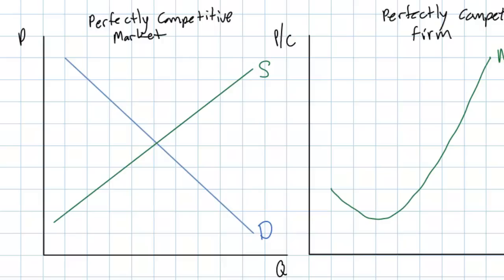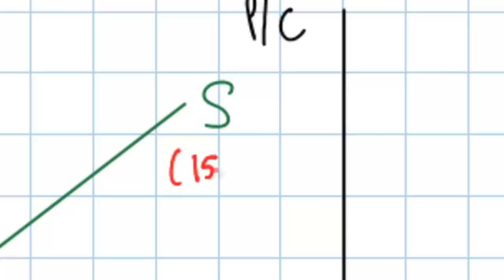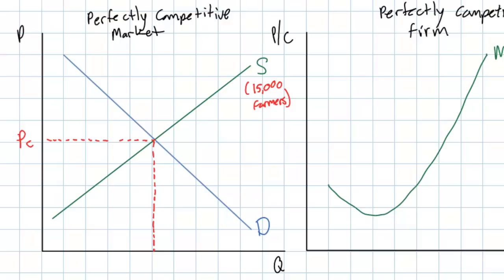The market for milk from cows in Switzerland shows many of the characteristics of perfect competition. There are about 15,000 dairy farmers in Switzerland selling tons of milk every day. The price that one farmer can sell its milk for is determined not by that one farmer — rather it is determined by the market as a whole. The supply from 15,000 farmers and the demand from all milk processors determines the equilibrium price of milk in Switzerland, which we'll call QE.